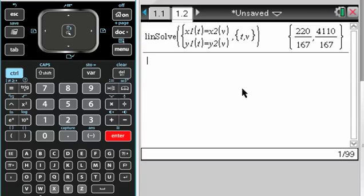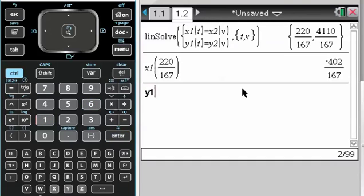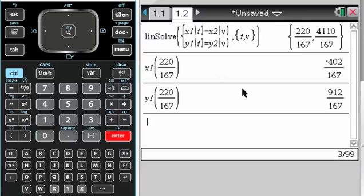Now what I want to do is actually figure out where the point of intersection is, so I want to do x1 of 220 over 167, and I want to do y1 of the same, 220 over 167. I get that.